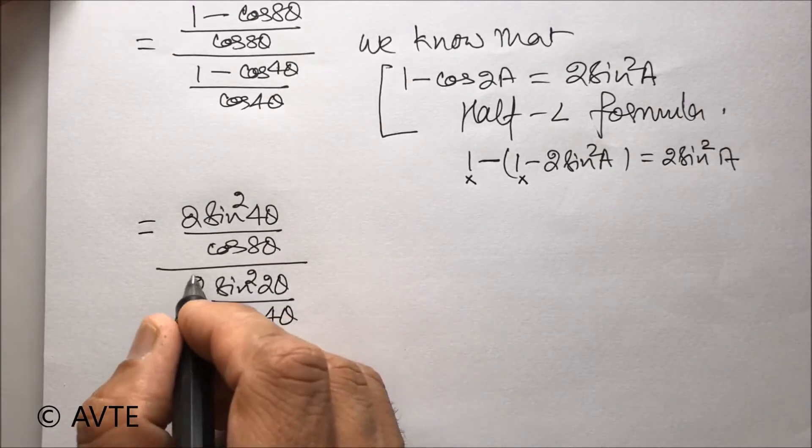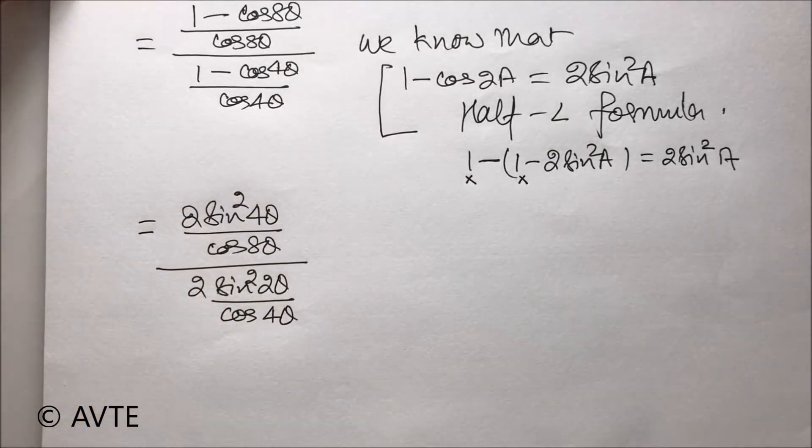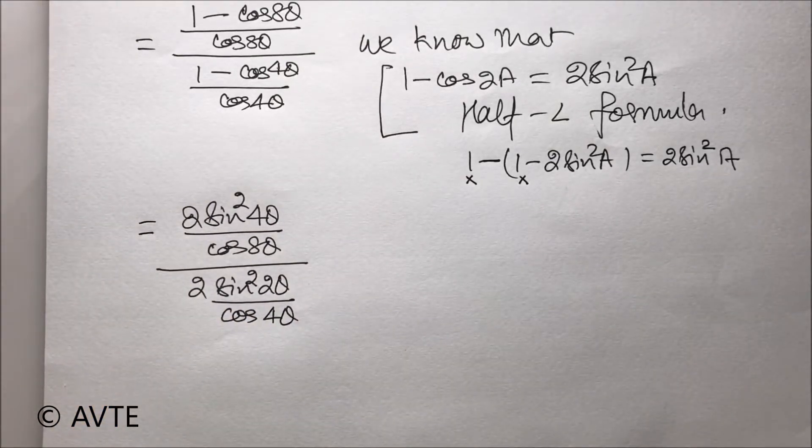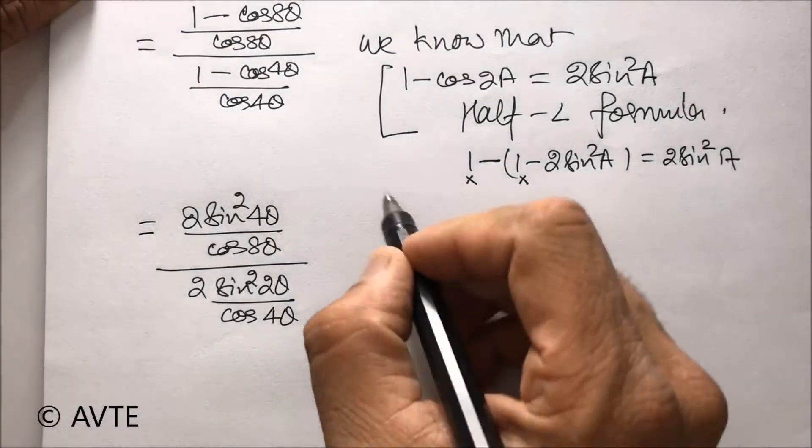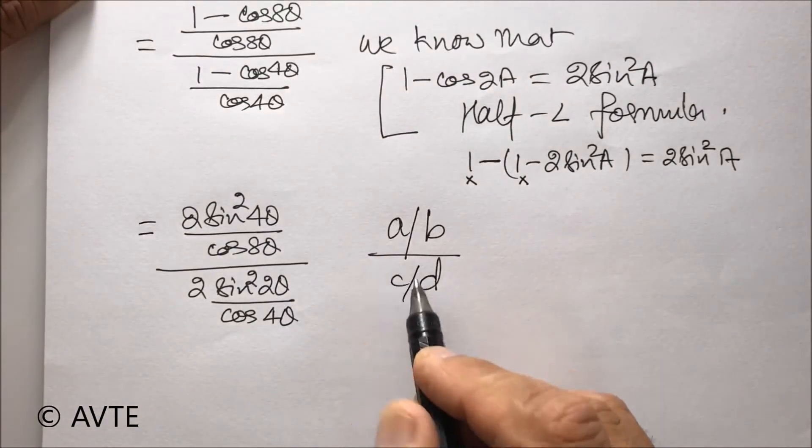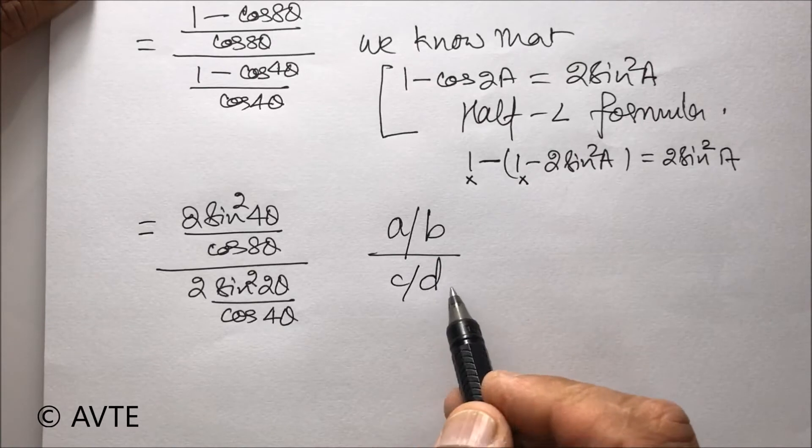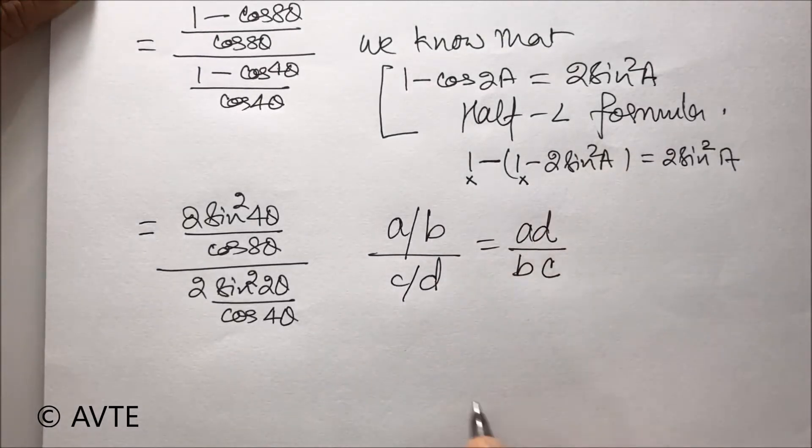Now, generally what happens, we cancel 2 because we have 2 in the numerator, 2 in the denominator. But in this question, you can let 2 as it is because we'll be needing 2. But if you cancel that, later you can multiply and divide by 2. Now, using a basic logic, a upon b divided by c by d is ad by bc.